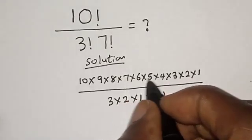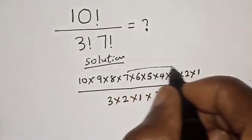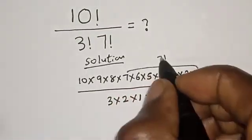If you look at this, this is 7 times 6 times 5 times 4 times 3 times 2. From here is 7 factorial.